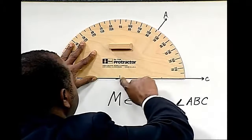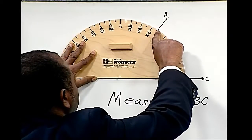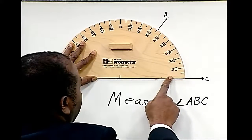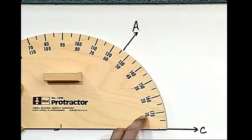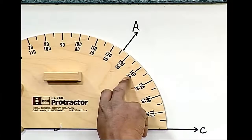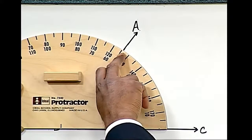As we notice, BA is on 55 degrees. Or you can count it starting at 0, 10, 20, 30, 40, 50, 55 degrees.